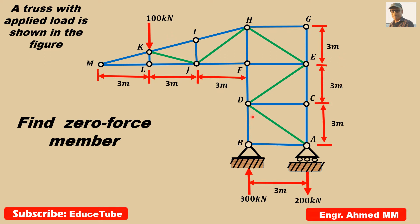This truss is supported by a hinge and a roller. We can see the reactions as 300 kilonewtons and 200 kilonewtons. So we have to find the zero force member. Let's move to the next slide to see how to find these zero force members.